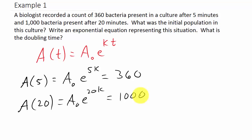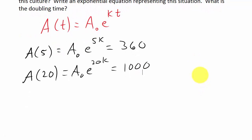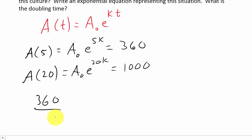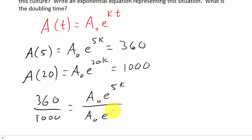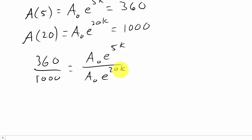I can set up a proportion. I know that 360 over 1,000 equals (a₀·e^(5k)) over (a₀·e^(20k)). This is equal to this, and this is equal to this, so I can set up my proportion. And now look — I can solve for k. The a₀'s cancel.